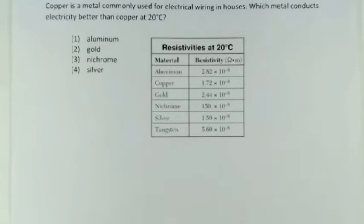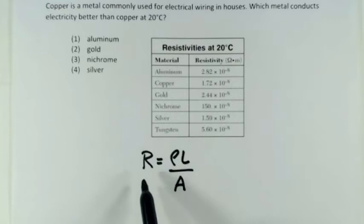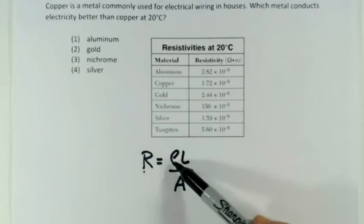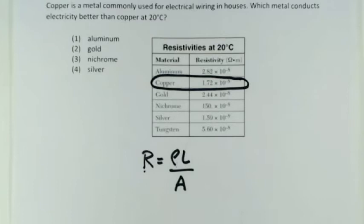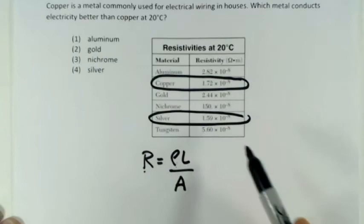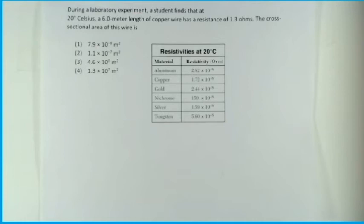Copper is commonly used for electrical wiring in houses. Which metal conducts electricity better than copper at 20°C? Using R = ρL/A, the one that conducts better will have a lower resistance, which means a lower resistivity. Copper's resistivity is 1.72 × 10⁻⁸ ohm·meters. We need a value less than that, and the only one on the list is silver, at 1.59 × 10⁻⁸ ohm·meters. So the answer is silver.